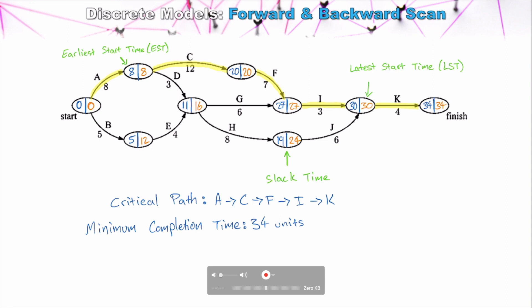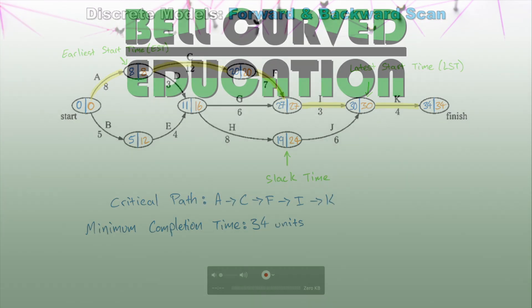That summarizes how we perform a forward and backward scan to identify the critical path. In the next video, we'll look at an example involving a dummy link, which is very important to understand before working through these types of questions.